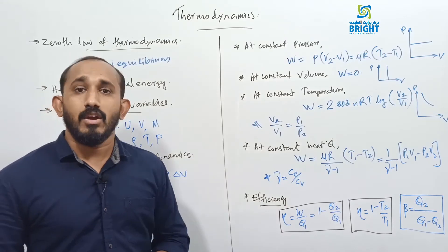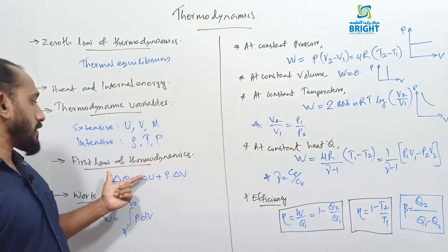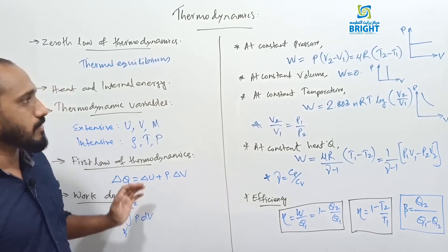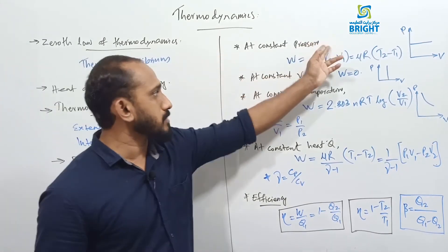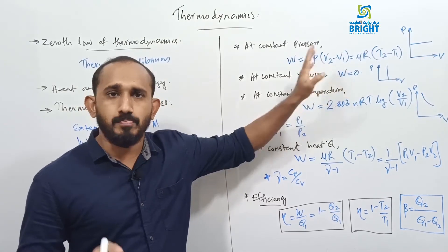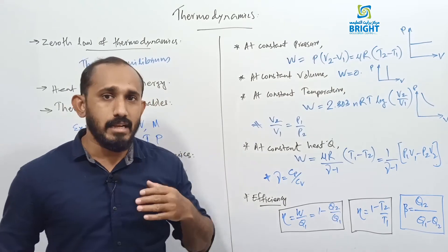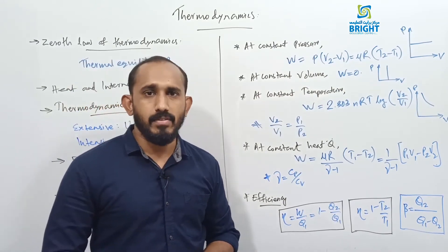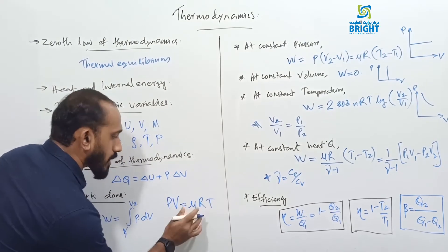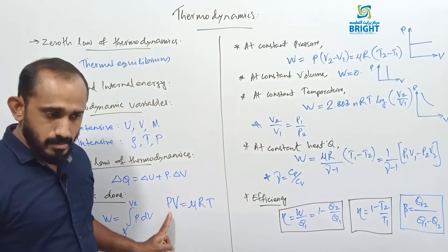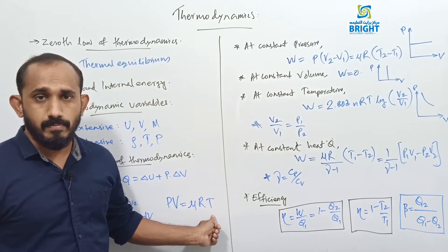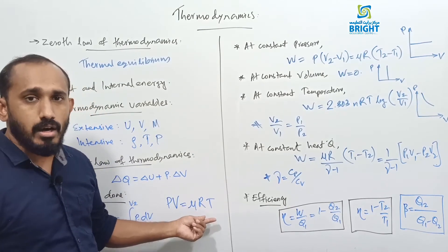In all these cases we can find work done using the First Law of Thermodynamics. At constant pressure, the work done will be P(V2 − V1). Using the ideal gas equation PV = nRT, we can write P(V2 − V1) = nR(T2 − T1), where n is the number of moles, R is the gas constant, and T is the temperature.